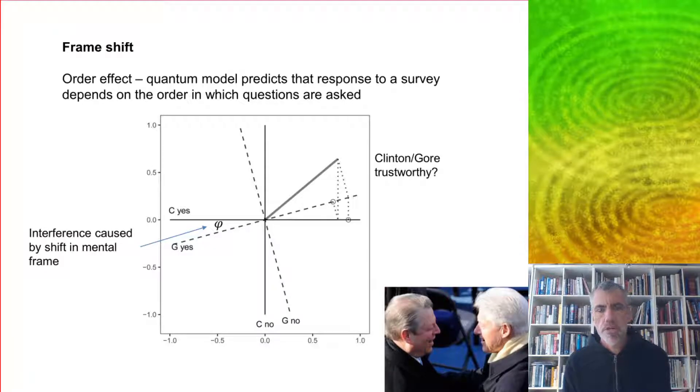This can be modeled using the quantum formalism. Here we've got our main axes. The horizontal and vertical axes correspond to the frame for addressing the Clinton question. And then the Gore axes, the dashed lines, are at an angle to that.